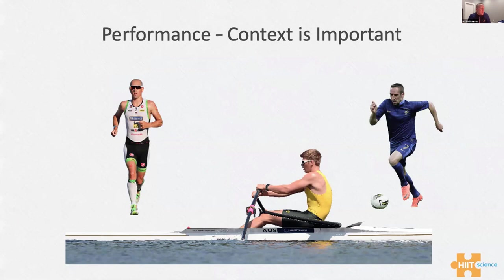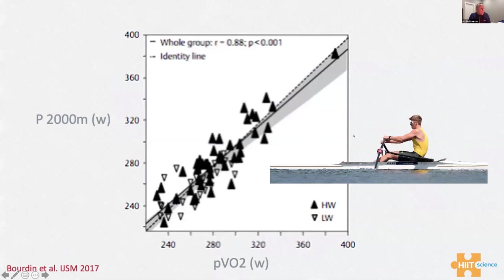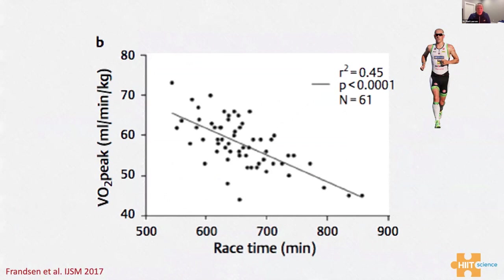Let's give an example with three different sports: a triathlete, a rower, and a football player. Take the rower — we can reverse-engineer the sport and see that the power required over 2,000 meters has a fairly linear relationship with power at VO2 max. So VO2 max is obviously going to be one of the key factors of importance, and we'll want HIIT sessions catered to target VO2 max.